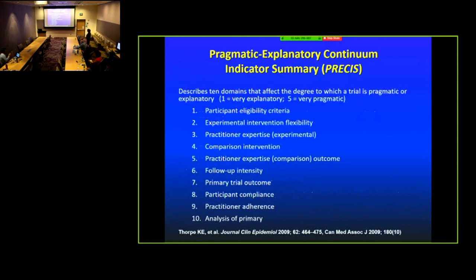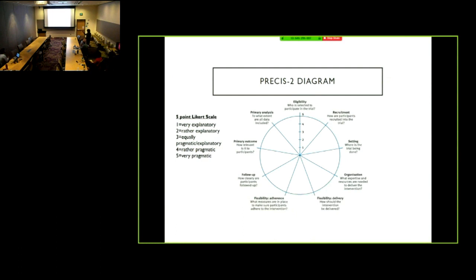This is something to underline the continuum. The PRECIS model, developed in tandem with Russ Glasgow, describes 10 domains that affect the degree to which a trial is pragmatic versus explanatory. Here's the newest diagram — it's a way of graphically describing a trial. Some people get very enamored of it. I think it's a very good tool for a PI to think about: how pragmatic is this trial, and how pragmatic do I want it to be?